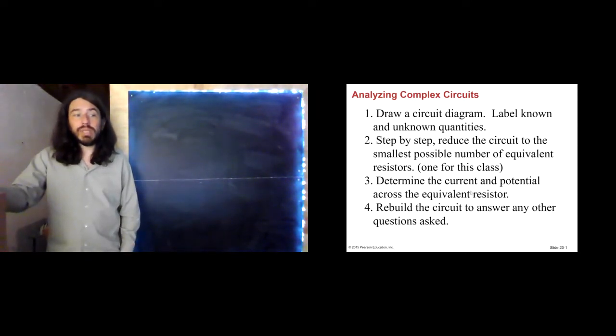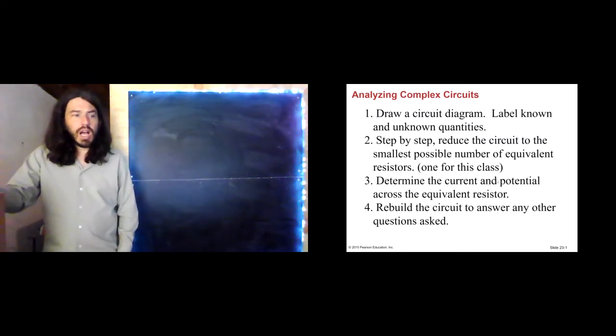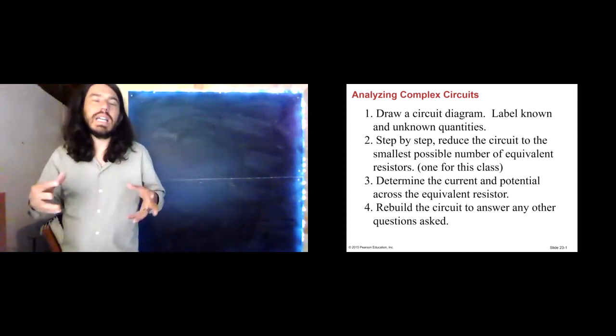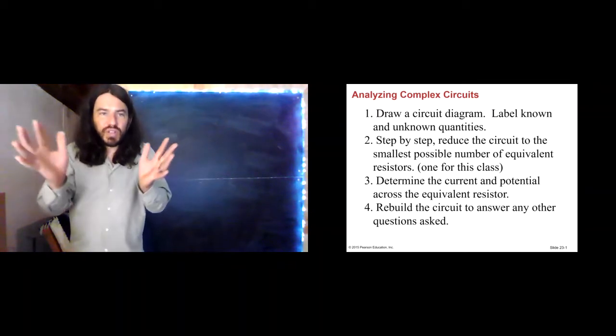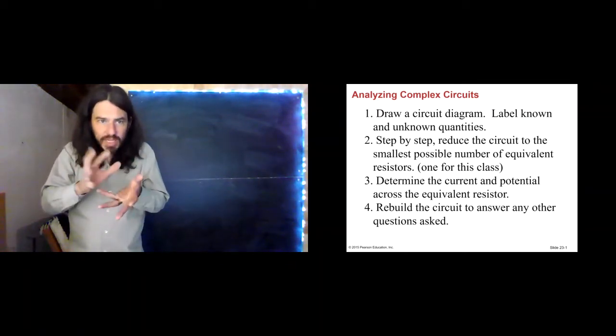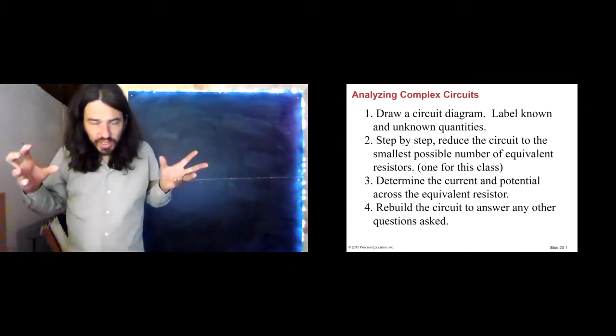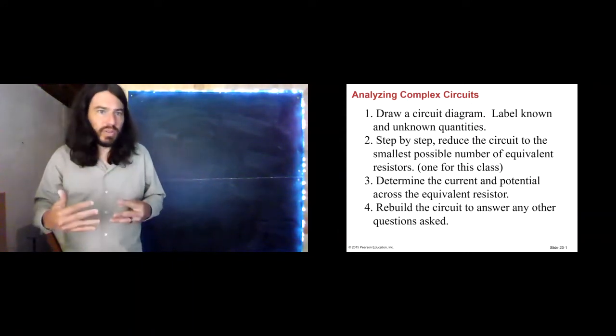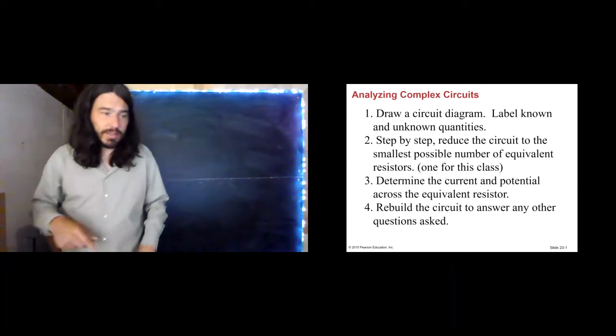Then what we're going to do is determine the current and potential across that equivalent resistance resistor. And then we're going to rebuild the circuit to answer any other questions that are asked. So the basic idea here is you simplify the circuit as much as you can, learn some information about it, and then you rebuild that circuit and you answer whatever questions you need to based on what we've learned from deconstructing it.